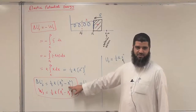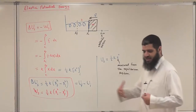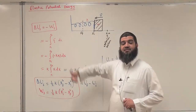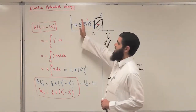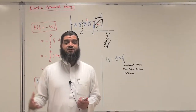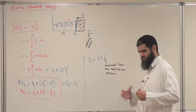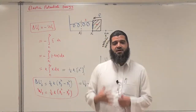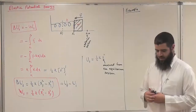However, ΔU_s may be positive or negative depending on the values of X final squared and X initial squared. For example, when the object pushes against the spring, ΔU_s will be positive — an increase in elastic potential energy. Conversely, if the object starts compressed and is released, there is a loss of elastic potential energy and ΔU_s will be negative. These definitions of ΔU_s and ΔU_g will be used in structured problems and in our discussion of conservation of energy.